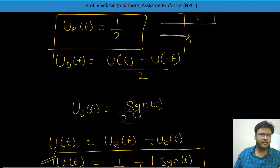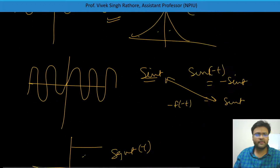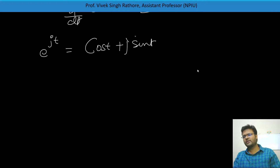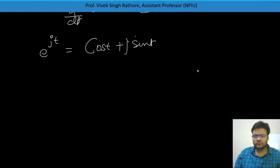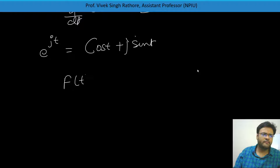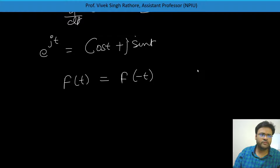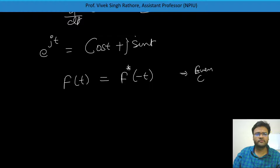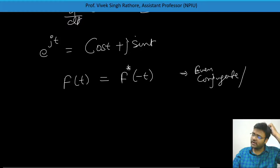Now let's look at complex valued signals. For real valued signals: if F(t) equals F of minus t, it is even. But for complex valued signals, if F(t) equals the conjugate of F of minus t, then it is called a conjugate symmetric signal (or even conjugate signal). If F(t) equals minus the conjugate of F of minus t, it is called a conjugate antisymmetric signal.